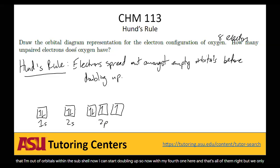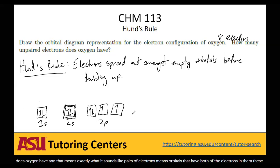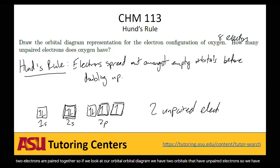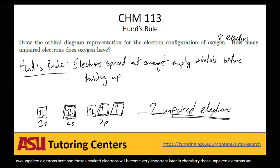How many unpaired electrons does oxygen have? Pairs of electrons means orbitals that have both electrons in them. Looking at the orbital diagram, we have two orbitals with unpaired electrons, so oxygen has two unpaired electrons. These unpaired electrons are very important — they are the ones that drive chemical reactions by interacting with unpaired electrons on other atoms, which is how chemical bonds form.